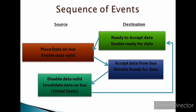The handshaking procedure follows the same pattern as in the source-initiated handshaking method. The destination unit initiates the transfer by indicating it is ready to accept data and enables the ready for data signal. The source unit then enables the data valid signal, and the destination unit disables the ready for data signal and accepts data from the data bus. Finally, the source unit disables the data valid signal, which invalidates the data on the bus, and the system returns to its initial state.